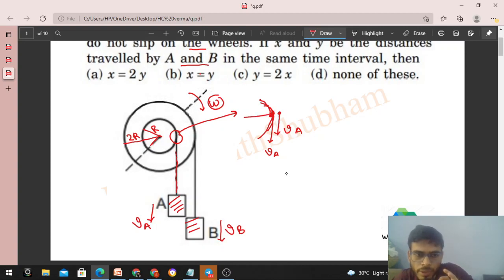So va equals r times omega. Similarly, you can write vb—that is 2r times omega. Let me zoom in and show you this point. The string is moving downward with vb, and the point on the wheel...